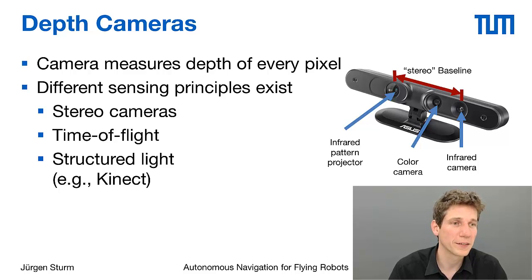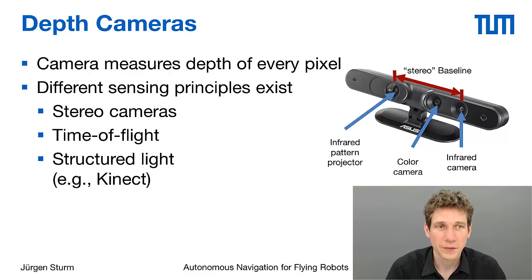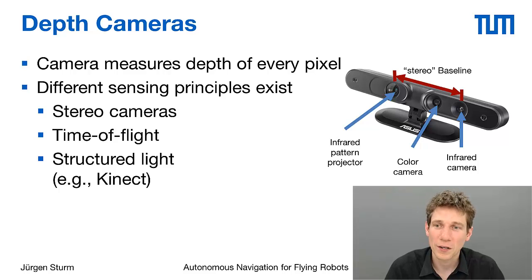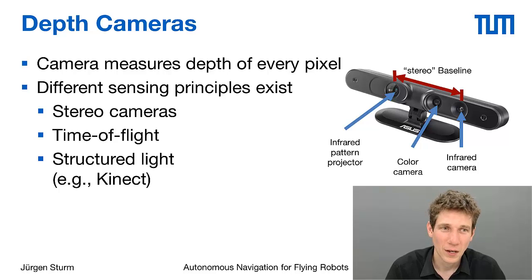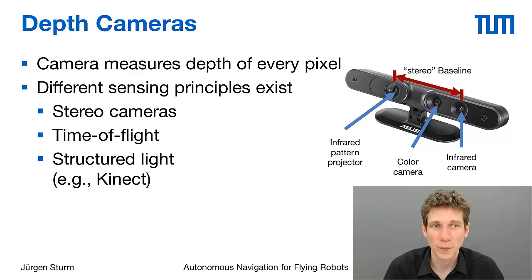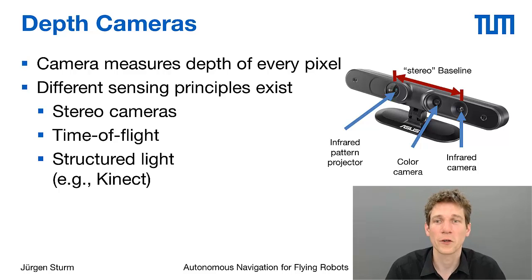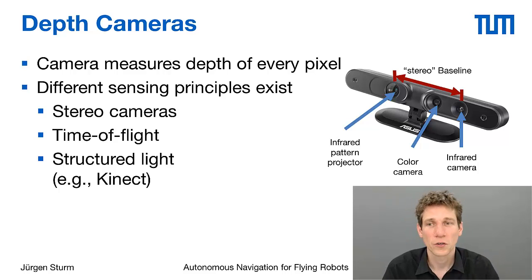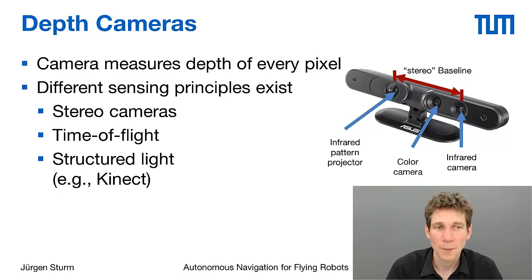There are different sensing principles for generating depth measurements. Stereo cameras and structured light cameras like this one match two images — either a reference image known from the projector, or two independent images from a stereo camera. Or you have direct measurement principles where you measure the time of flight of a light pulse that you send out and the time until it returns.